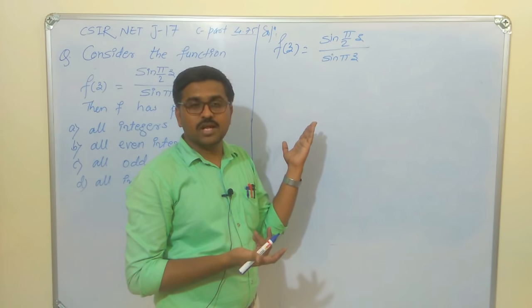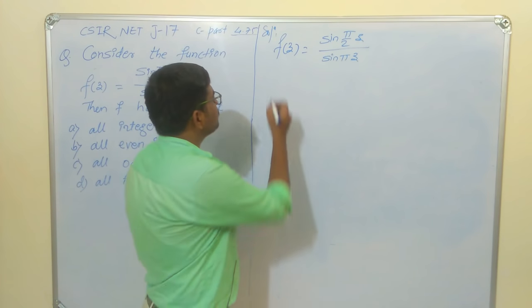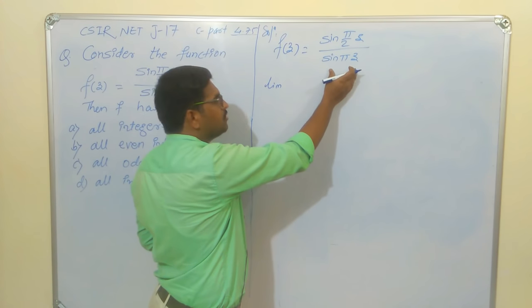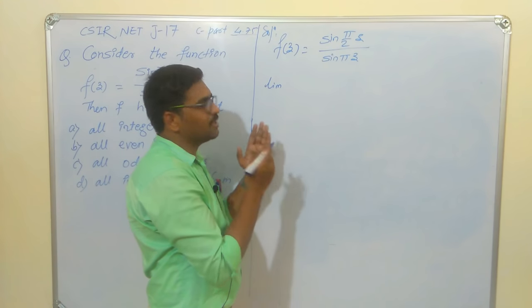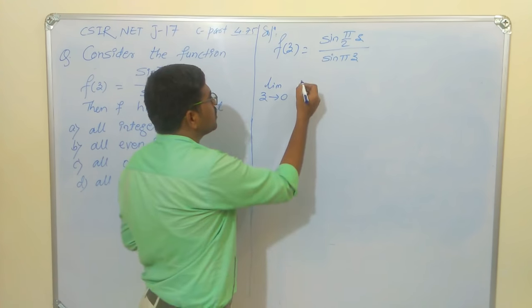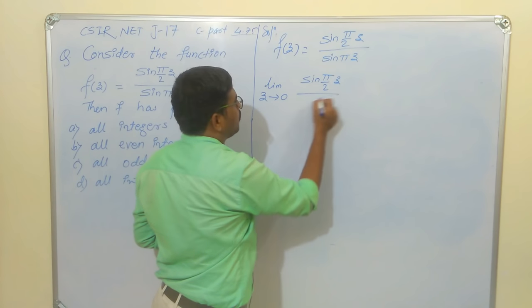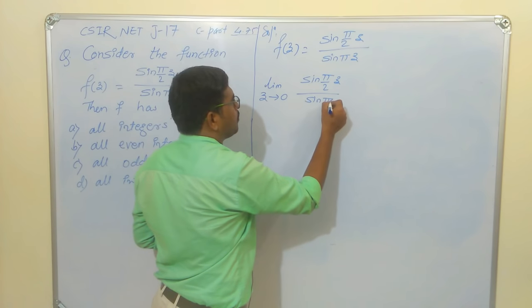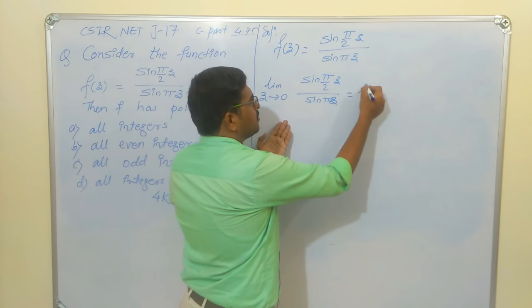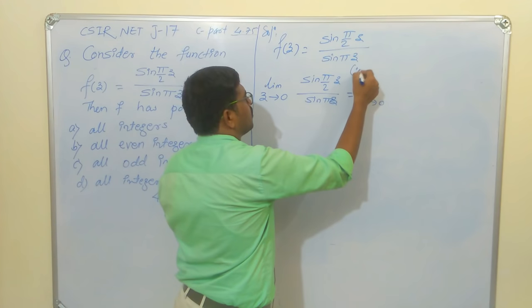But the question asks about poles specifically, and at z=0 some other type of singularity might occur. So let us check z=0 first. Since both the numerator and denominator are 0 at z=0, they might cancel. We take the limit as z tends to 0 of sin(πz/2) / sin(πz) — this gives a 0/0 form.